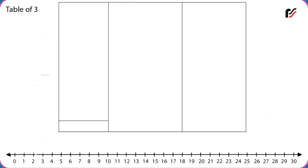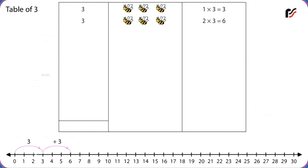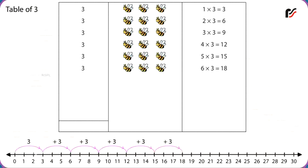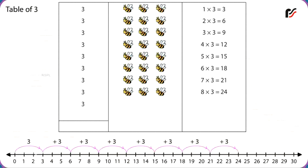Table of 3. 1 x 3 is equal to 3. 2 x 3 is equal to 6. 3 x 3 is equal to 9. 4 x 3 is equal to 12. 5 x 3 is equal to 15. 6 x 3 is equal to 18. 7 x 3 is equal to 21. 8 x 3 is equal to 24. 9 x 3 is equal to 27. 10 x 3 is equal to 30.